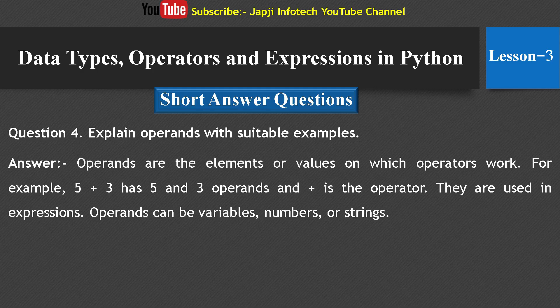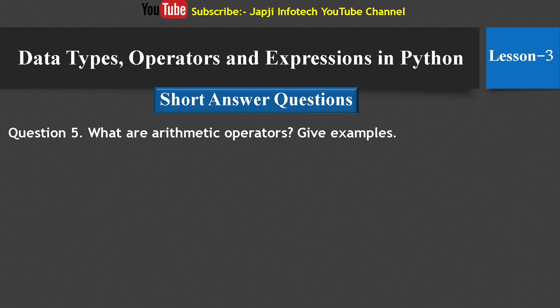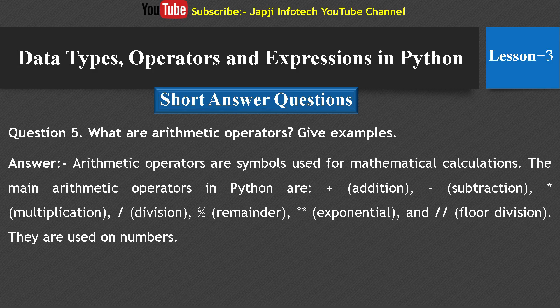Fourth question: Explain operand with suitable examples. Answer: Operands are the elements or values on which operators work. For example, in 5 + 3, the numbers 5 and 3 are operands and plus is the operator. They are used in expressions. Operands can be variables, numbers, or strings.